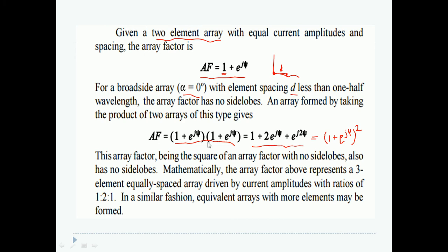This array factor being the square of an array factor with no side lobes also has no side lobes. Mathematically, the array factor above represents a three-element equal spaced array driven by current amplitude with a ratio 1, 2, and 1. That is, the elements in the array are fed with amplitude 1, 2, and 1 amplitude ratios.